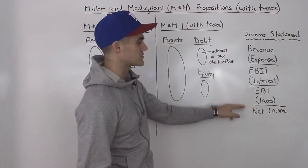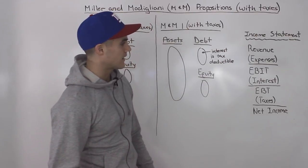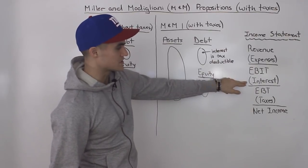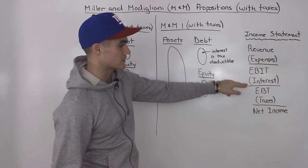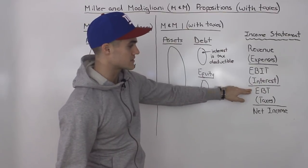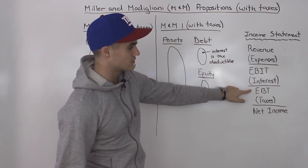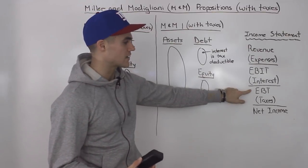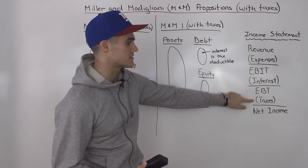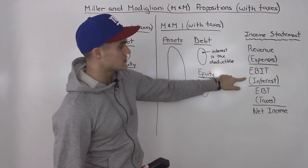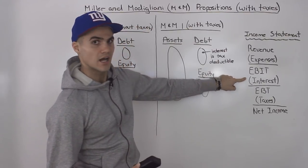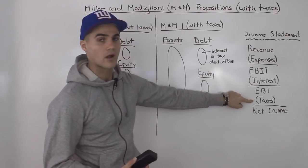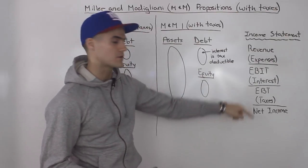I drew out a general format of an income statement over here. Notice that we have earnings before interest and taxes. We subtract interest — we deduct it — then we get earnings before taxes, and then we take that earnings before taxes and multiply it by the tax rate to get taxes. Notice the more interest that we deduct, the lower that earnings before taxes number is going to be, and hence the lower our taxes are going to be.